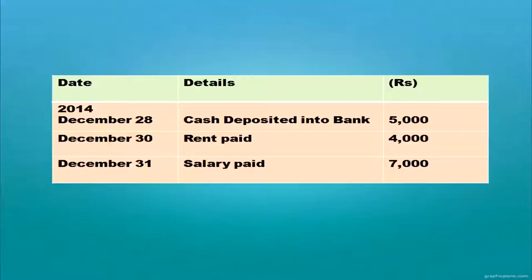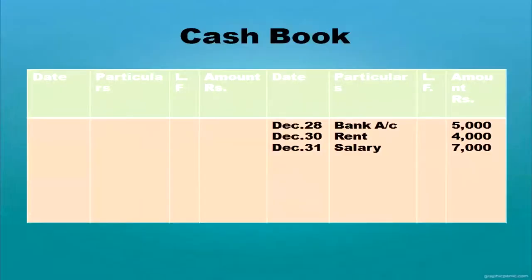Further transactions: cash deposited into bank — bank account debit to cash. Rent paid — rent account debit to cash. Salary paid — salary account debit to cash. In the cash book, these are posted on the credit side: 'By Bank' for the bank deposit, 'By Rent,' and 'By Salary,' all on the credit side (payment side).